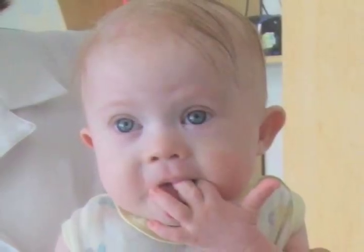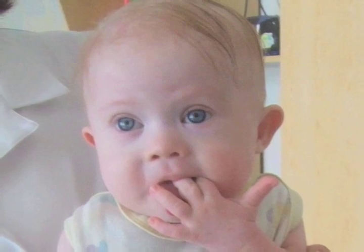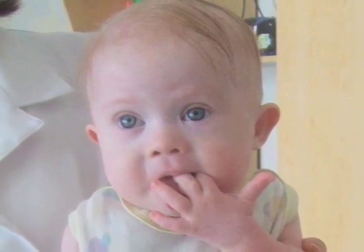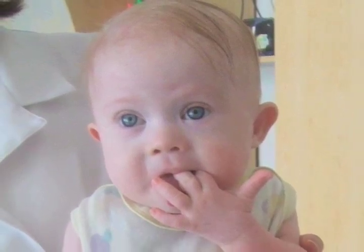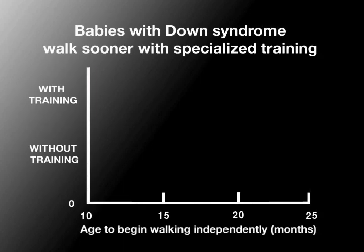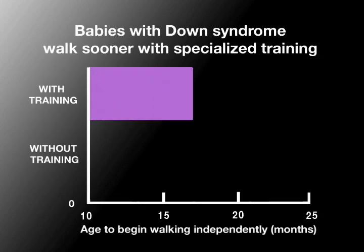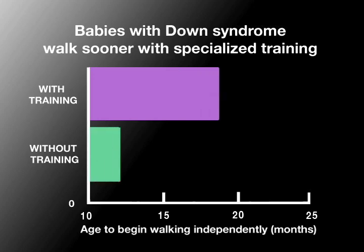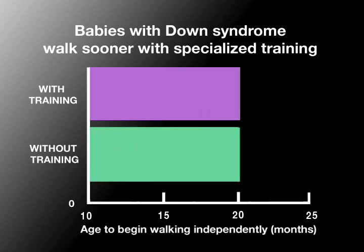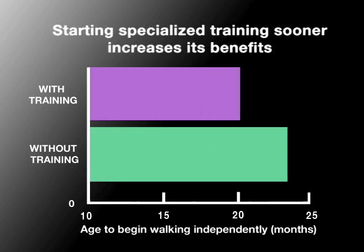Motor activity not only contributes to normal development, but may also improve the development of children with disabilities. Usually, children with Down syndrome begin to walk one year later than those without it. But research has shown that when given specialized treadmill training, these children begin walking on their own sooner than infants with Down syndrome who do not get the extra help. Starting specialized treadmill training sooner rather than later increases its benefits.